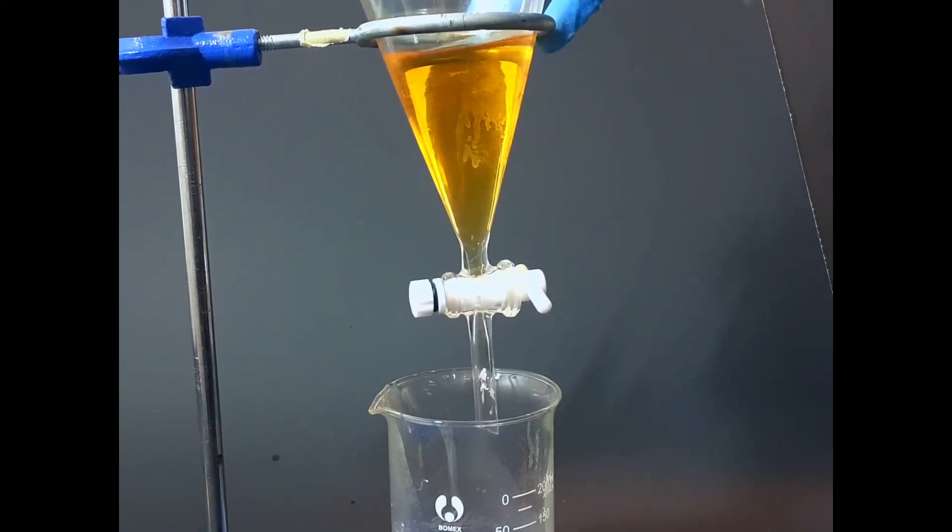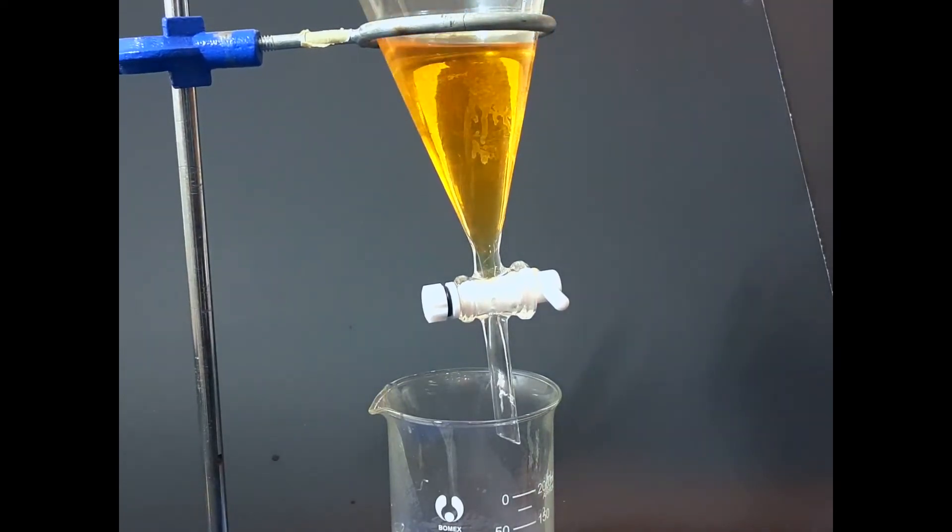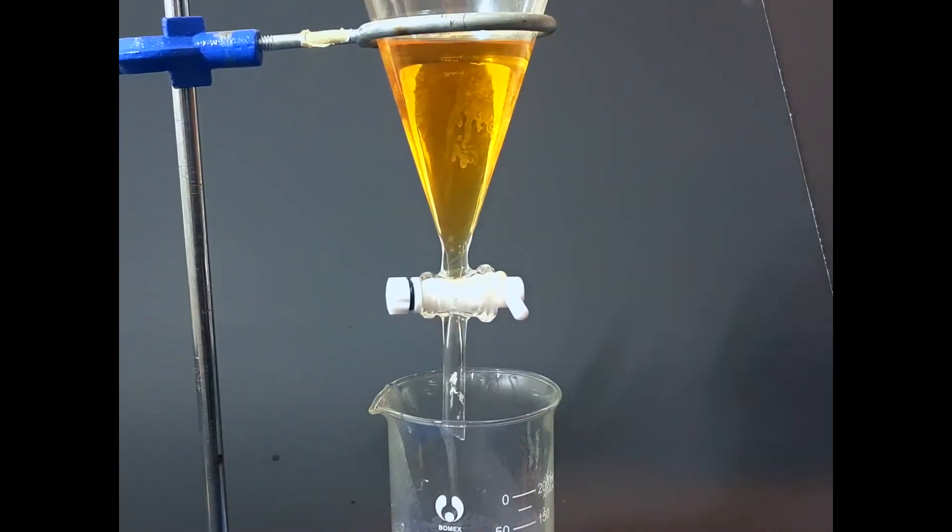Now, in order not to form an emulsion with the DCM and to make sure it separates nicely, I don't need to shake it a lot. All I need to do is just pour it back and forth to make sure that everything is nice and dissolved.